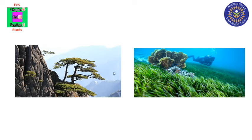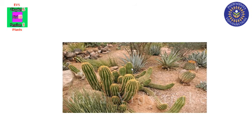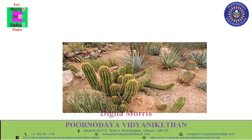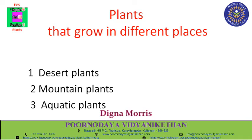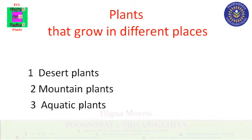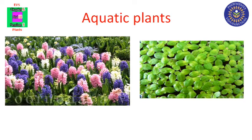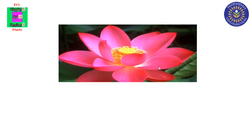Plants are found everywhere — on the mountains, in the seabed, in deserts and many other places. Now we can learn about plants that grow in different places: desert plants, mountain plants, and aquatic plants. Plants like hyacinth, duckweed, and lotus can survive only in water. Such plants are called aquatic plants.